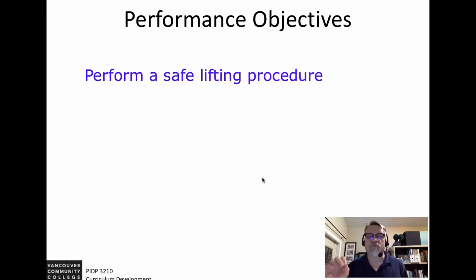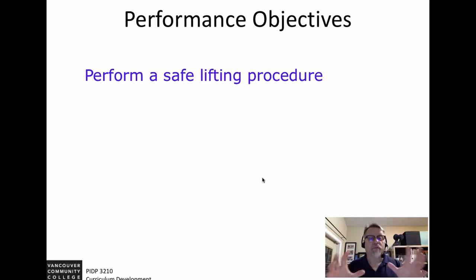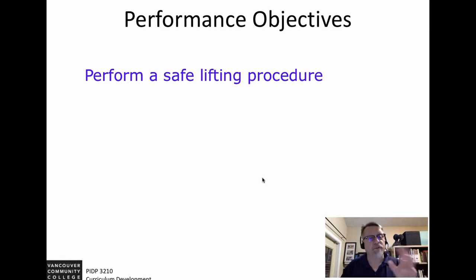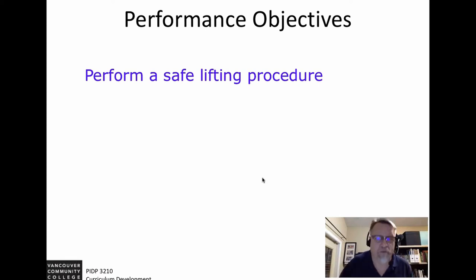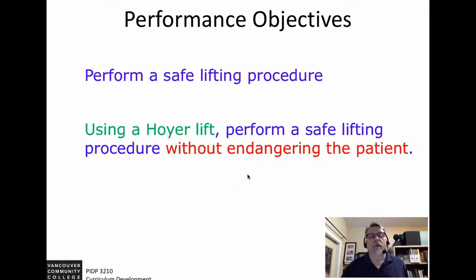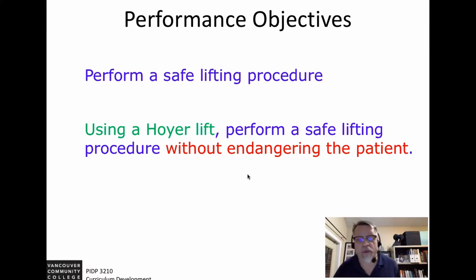A performance objective is really taking one of the objectives that you've developed and adding two key components: condition and criteria. For example, 'perform a safe lifting procedure' is the objective you might have developed. Now, 'using a Hoyer lift to perform a safe lifting procedure without endangering the patient' is a performance objective.